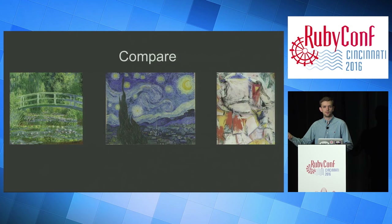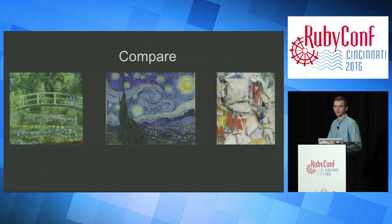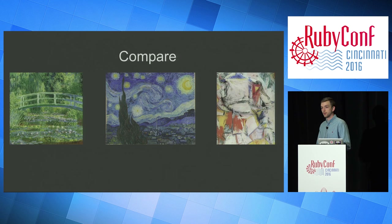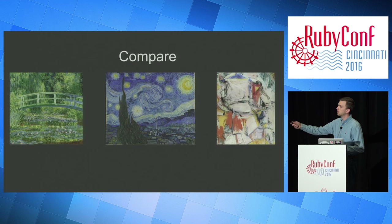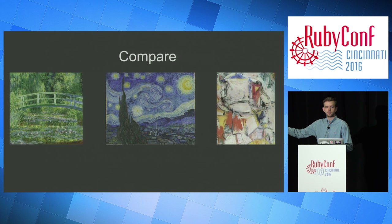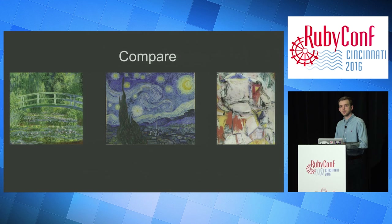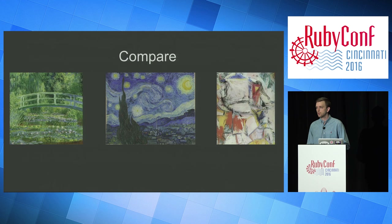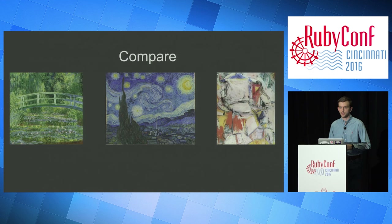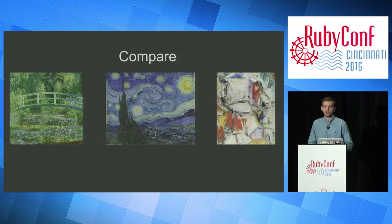I want to talk about painting for a second. Everyone knows Starry Night by Van Gogh. The question I want to pose: would this painting have been as famous or influential if Van Gogh had used a Monet style on the left, or the style on the right — which is a $300 million painting? Probably not. He used a very specific style for a very specific reason. Throughout this talk, you'll see that many patterns used by different libraries were used to achieve a certain aesthetic design. It's not required — your interface can be very ugly if you want. But that's not the Ruby way.